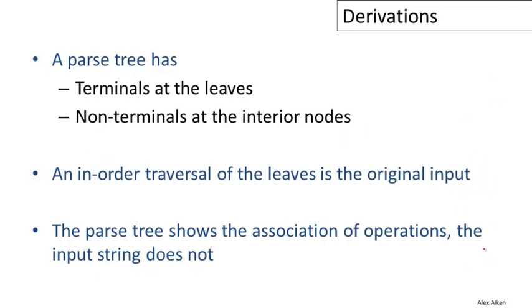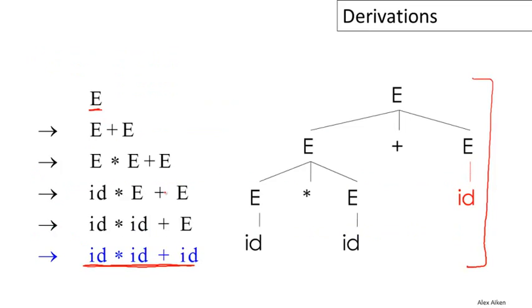Now there are a lot of interesting things to say about parse trees. First of all, parse trees have terminals at the leaves and non-terminals at the interior nodes. Furthermore, an in-order traversal of the leaves is the original input. If we look at the leaves, we can see that they're all terminals. The interior nodes are all non-terminals; in this case, all the interior nodes are E and the leaves are the terminals of the string. If we do an in-order traversal of the leaves, we get exactly this input string that we started with.